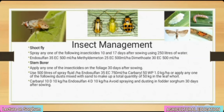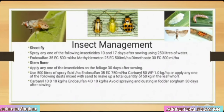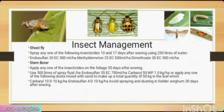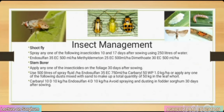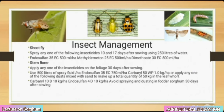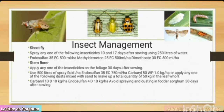Insect management — shoot fly: spray any one of the following insecticides on 10 and 17 days after sowing using 250 litres of water per hectare: endosulfan 35 EC 500 ml per hectare, methyl demeton 25 EC 500 ml per hectare, or dimethoate 30 EC 500 ml per hectare. Stem borer: apply any one of the insecticides on the foliage 30 days after sowing using 500 litres of spray fluid per hectare: endosulfan 35 EC 750 ml per hectare or carbaryl 50 WP 1 kg per hectare. Or apply dust mixed with sand (total 50 kg) in the leaf whorl: carbaryl 10D 10 kg per hectare or endosulfan 4D 10 kg per hectare. Avoid spraying and dusting in water sorghum 30 days after sowing.